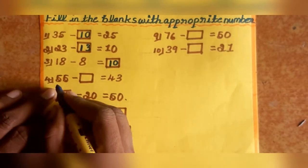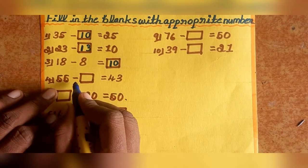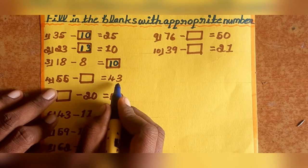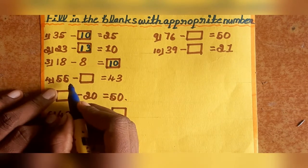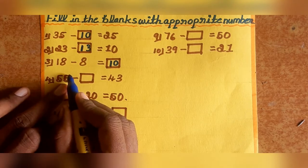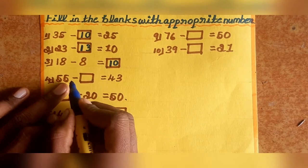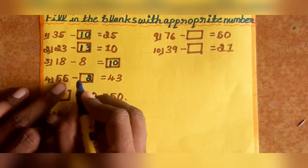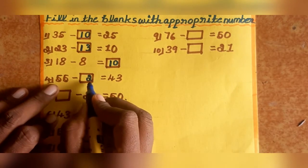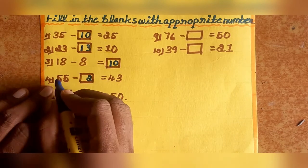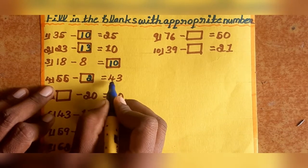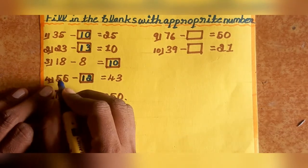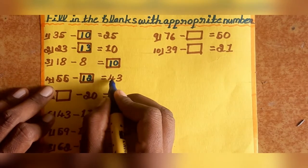Next, fourth one: 55 minus blank equals 43. First, units place: answer is 3. So 5 minus 2 equals 3. Next, tens: 5 — how many layers? Answer is 4. So 5 minus 1, balance is 4.